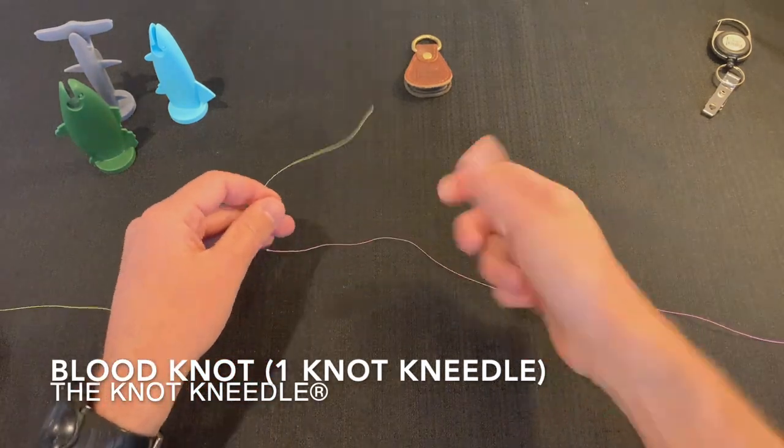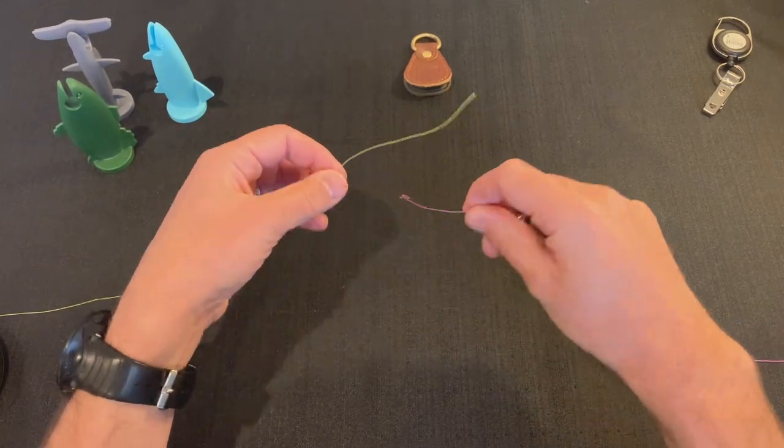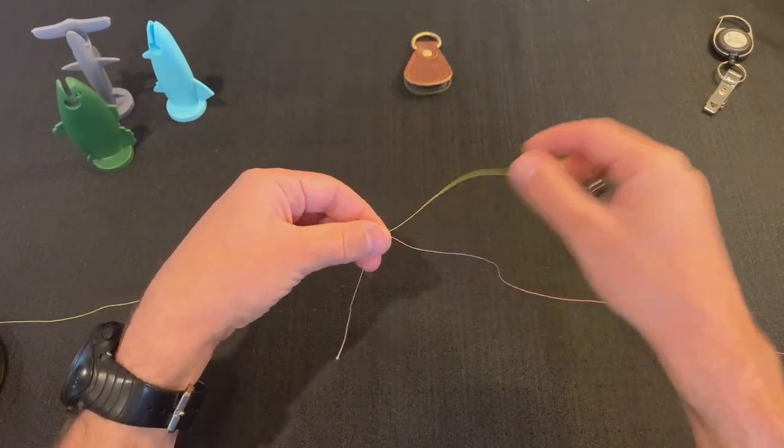I'm going to show you how to tie a blood knot using the knot needle. The yellow line is my leader with the pink line being my tippet.